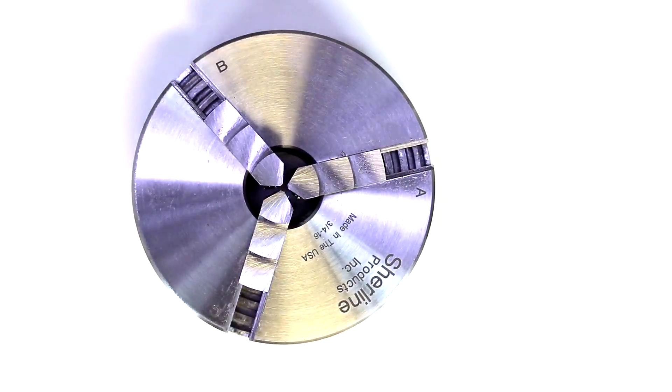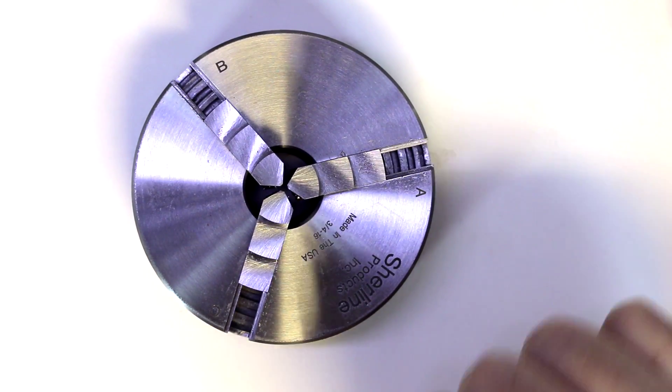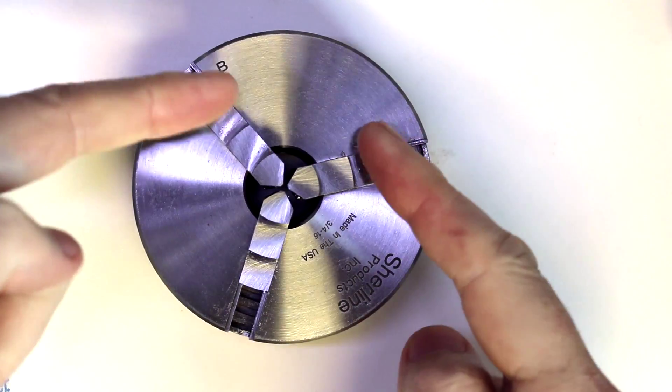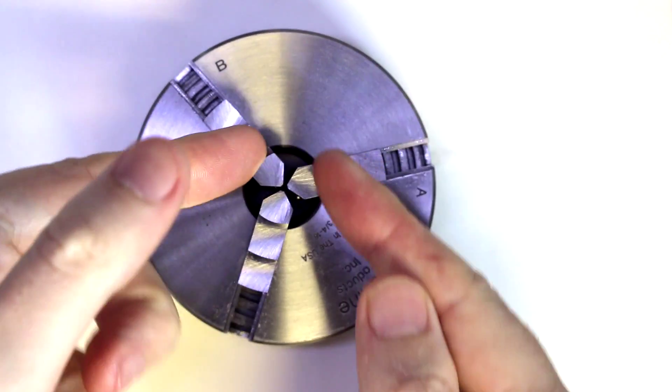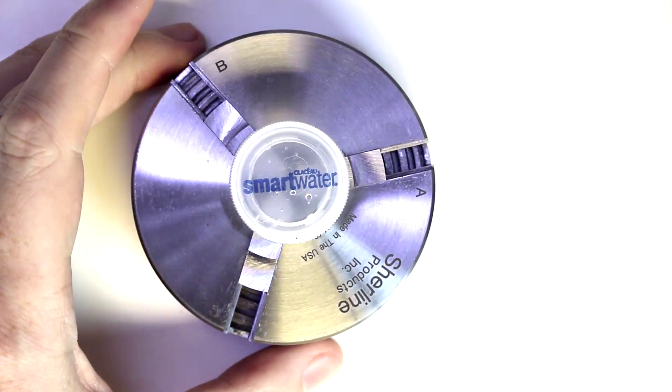So far we've looked at using this to clamp pieces on the inside of these jaws. We also have the option—as you can see there are steps milled into the jaws—and these steps can be used to hold pieces on their inside circumference.